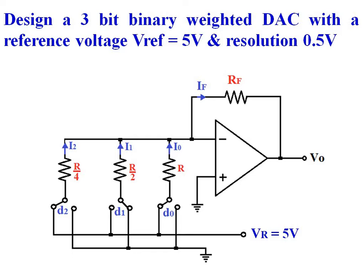We are going to design a 3-bit binary-weighted resistor network digital-to-analog converter with reference voltage Vref equal to 5V and resolution equal to 0.5V. The circuit consists of an operational amplifier in inverting mode, as its non-inverting input is connected to ground. The binary-weighted resistor network consists of three resistors of values R, R/2, and R/4. A feedback resistance RF is connected between the output terminal and the inverting input of the op-amp.